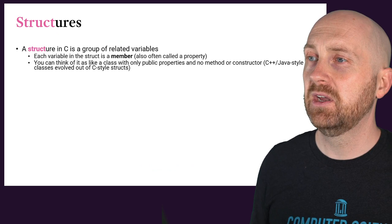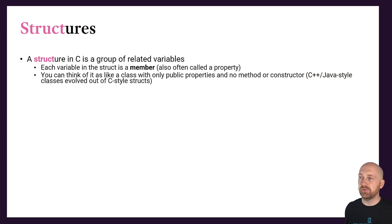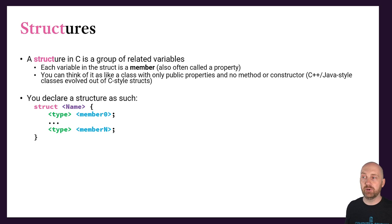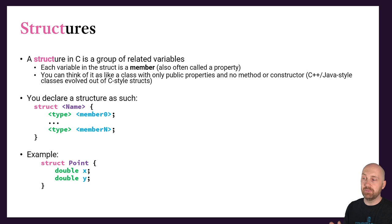A struct is a group of related variables. We call each of those related variables a member. This is just like having a class where all you have are public properties or attributes or fields, with no methods and no constructors. The way that we declare them is pretty familiar: we have the keyword struct, we give it a name, and then in the curly braces we define the grouped variables. Each variable or member of the struct has a type and a name. In our example, we'll define a struct named point with two double members: X and Y.